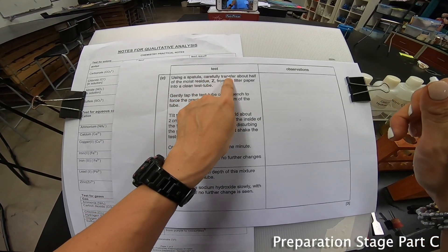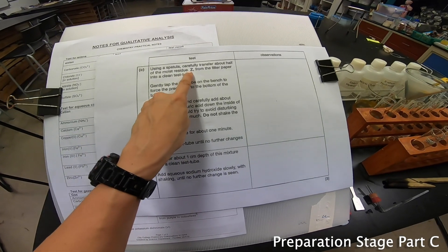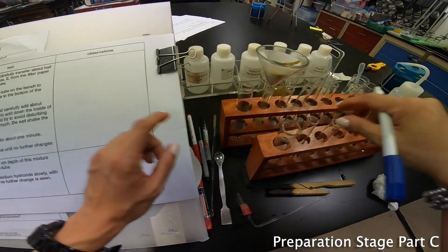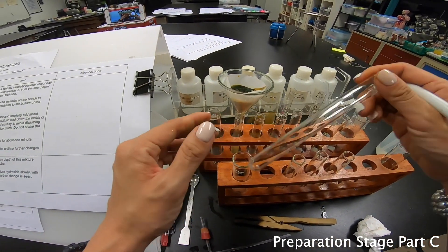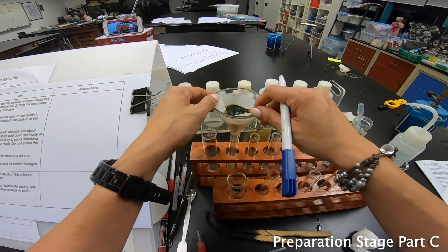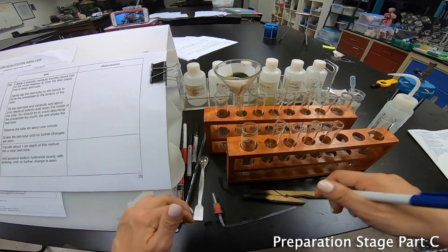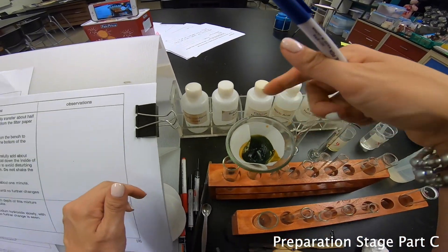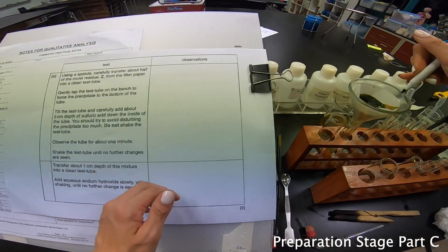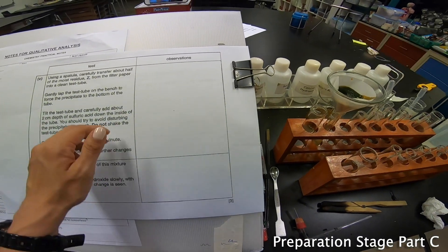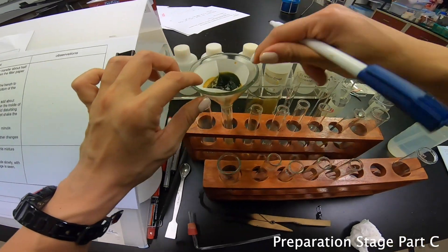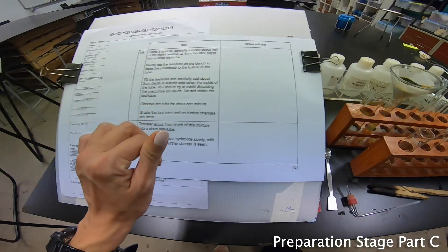Using a spatula, carefully transfer about half of the moist residue Z from the filter paper into a clean test tube. So I have a clean test tube over here, and this is my moist Z. Can you see that Z is actually a dirty green, very dirty green residue? But the side here is actually yellowish brown.